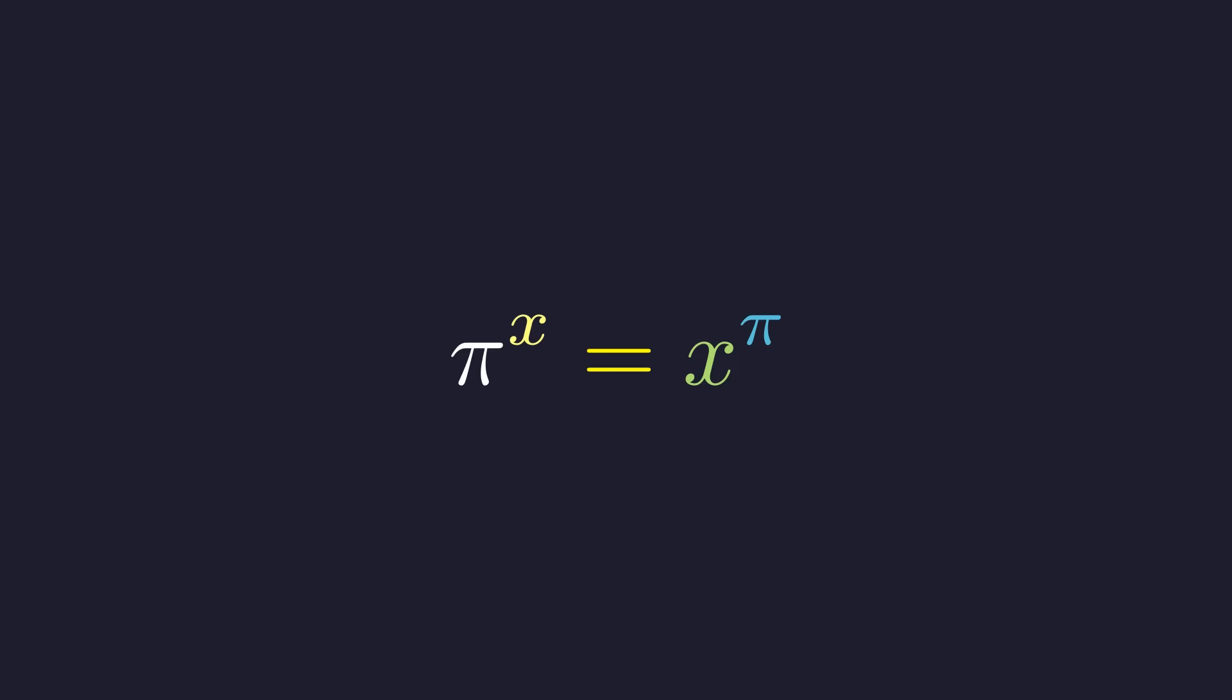Well, as it turns out, there's actually a beautiful way to tackle this. Before we dive in, let's establish our domain. For x to the power of pi to be well defined in the real numbers, we need x to be positive. So we're looking for real solutions where x is greater than zero.